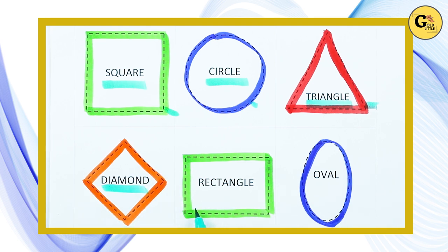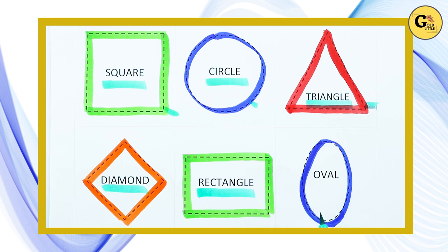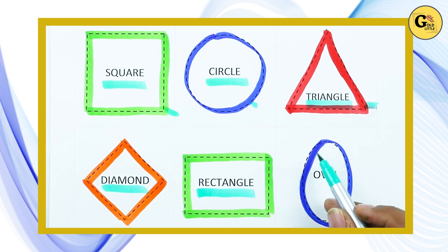Which shape is this? Rectangle. R-E-C-T-A-N-G-L-E. It's a rectangle with green color. Which shape is this?